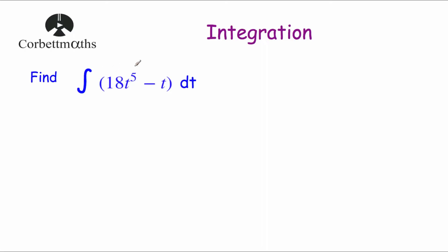This time the letters have changed. We've got: integrate 18t to the power of 5 minus t with respect to t. It just means we integrate t instead of x. 18t to the power of 5: increase the power to t to the power of 6, 18 divided by 6 is 3, so 3t to the power of 6. Then minus t: increase the power to t squared, 1 divided by 2 is a half, so minus a half t squared. Then plus c. So we've integrated 18t to the power of 5 minus t with respect to t.